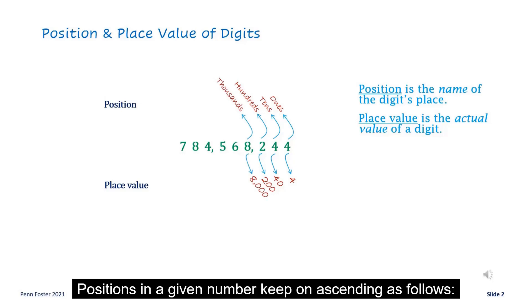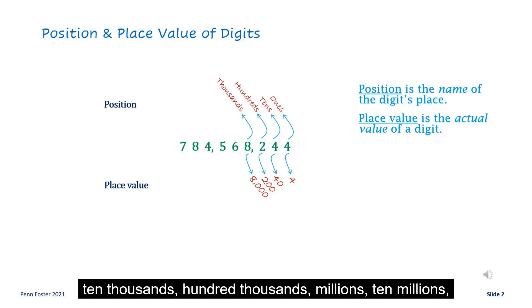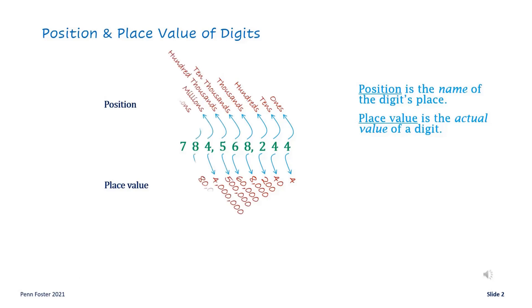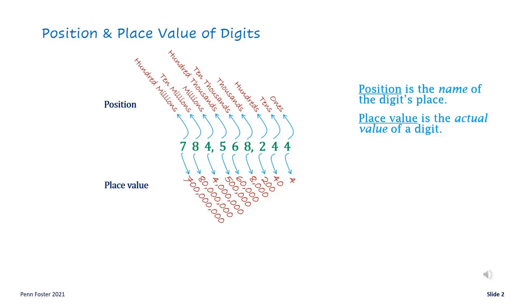Positions in a given number keep on ascending as follows: ten thousands, hundred thousands, millions, ten millions, hundred millions, and so on.